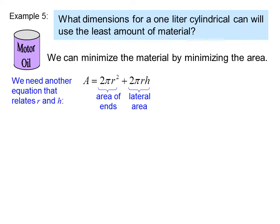We need another equation that relates r and h. We know that volume equals πr²h. That's the formula for the volume of a cylinder. And 1 liter equals 1,000 cubic centimeters. So since we want the can to hold 1 liter, we can write the equation 1,000 equals πr²h, or 1,000 over πr² equals h.